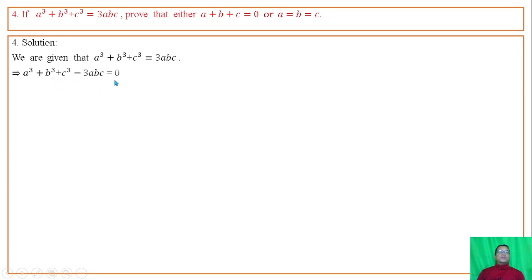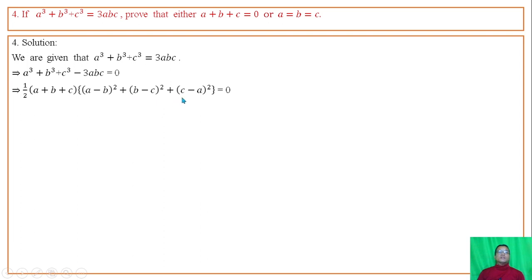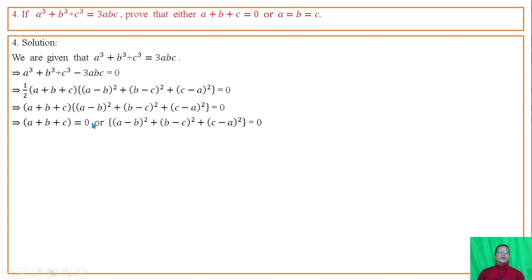We are given that a cube plus b cube plus c cube equals thrice abc. Moving the right-hand side to the left, the expression equals 0. Its factorization form is half times (a plus b plus c) times (a minus b whole square plus b minus c whole square plus c minus a whole square) equals 0. The product of these two factors is 0, so either the first factor may be 0 or the second factor may be 0.